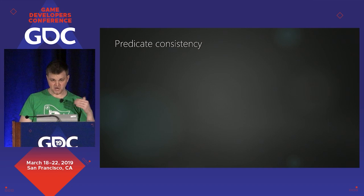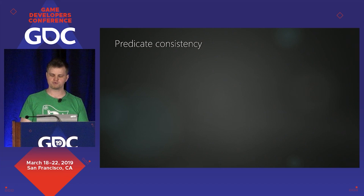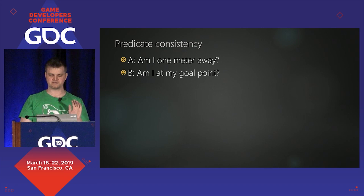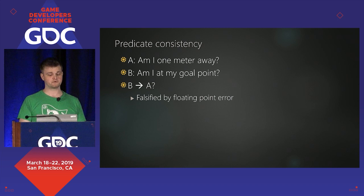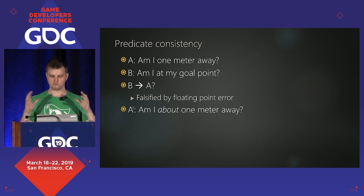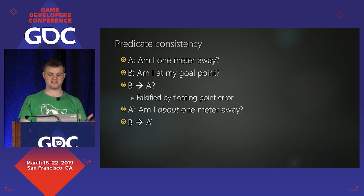Tolerance solved that last problem, which is a good enough solution. Now, we have two predicates: the navigation system's predicate — 'am I at my goal point?' — and the combat system's predicate — 'am I one meter away?' The assumption is that if navigation says yes, then combat is expected to agree. That's mathematically reasonable, but throw in floating point error and you lose that consistency. What we did with the tolerance — the reason it was an acceptable solution — was that we made this logical consequence more robust, so that when navigation says 'you've arrived,' combat will definitely say 'I'm approximately one meter away.'